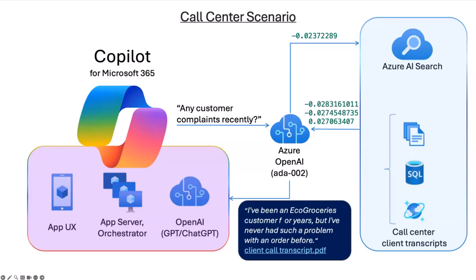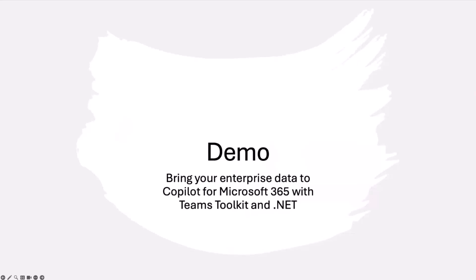As you can see in the response, the text says 'I've been an Echo Grocery customer for years but I've never had such a problem with an order before.' We don't have the word 'complaints' in that sentence, but thanks to semantic and vector search working together, we understand the similarity. That makes the scenario very unique. Let me jump into the demo and show you how this enterprise data coming from Azure AI Search works within our plugin to extend Copilot for Microsoft 365.